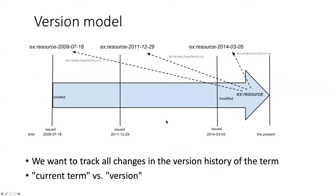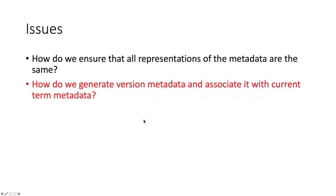Another feature that the specification describes is a version model where current terms move through time, but they can change, and as they change, different versions of those terms are issued. We want to be able to track all the previous versions so we can see what the state was of a particular term in the past. So how do we generate the version metadata and associate it with current term metadata?